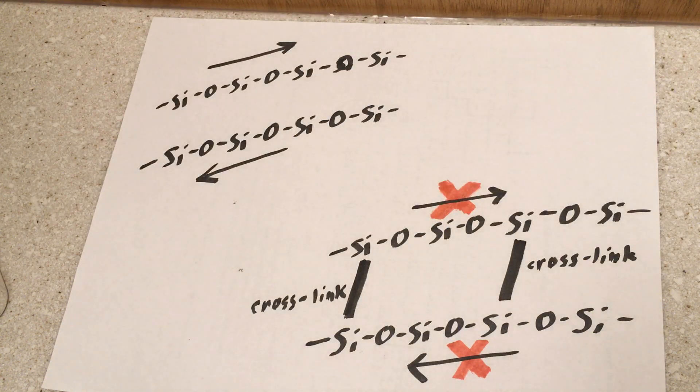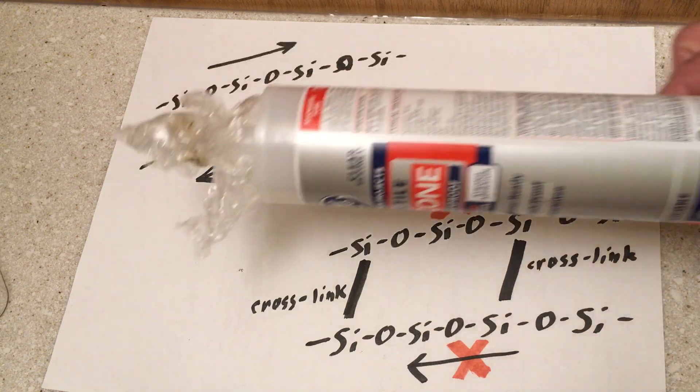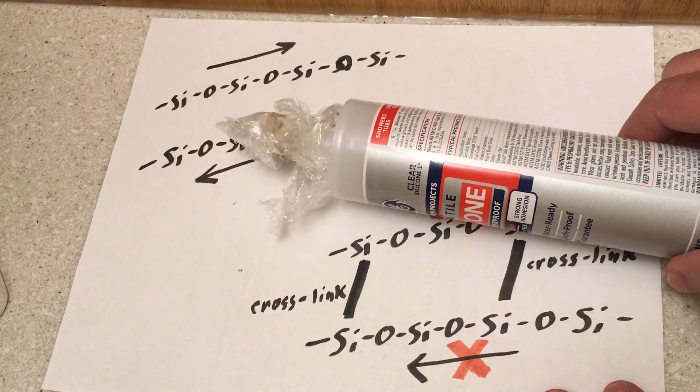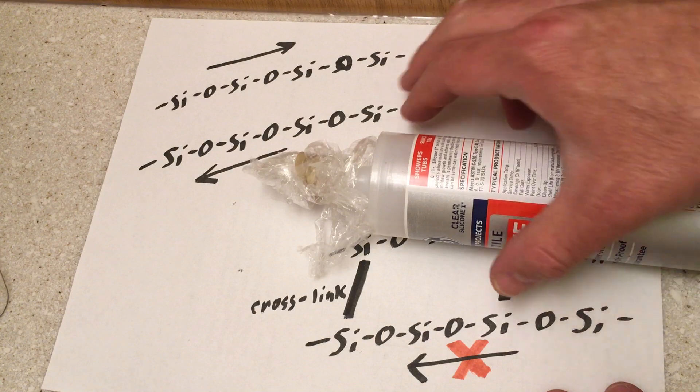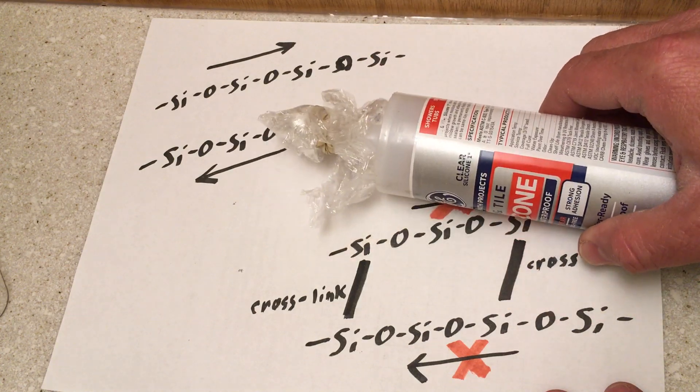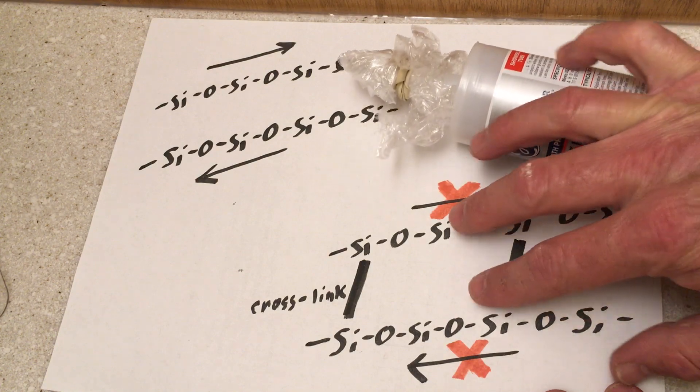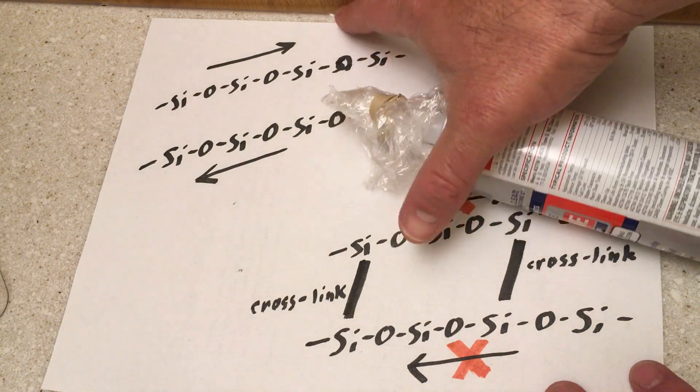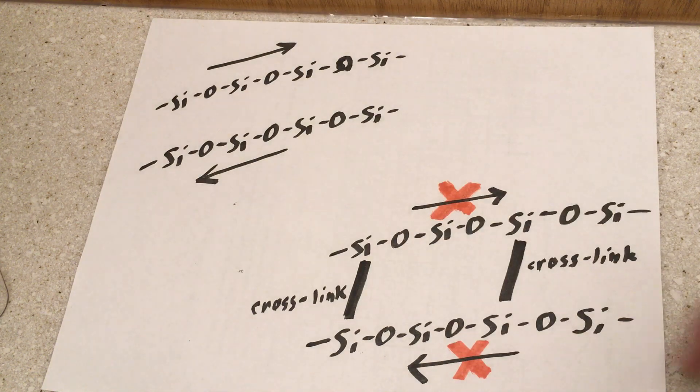And it's a similar idea with caulk. Caulk gets squeezed out of a tube, it's sort of liquid-like. But after a time it cross-links to produce this sort of rubbery solid material.